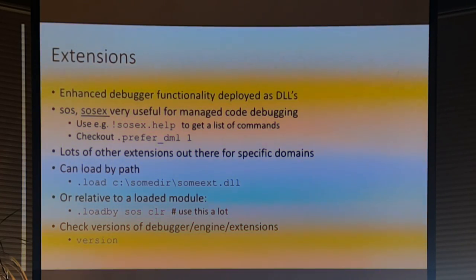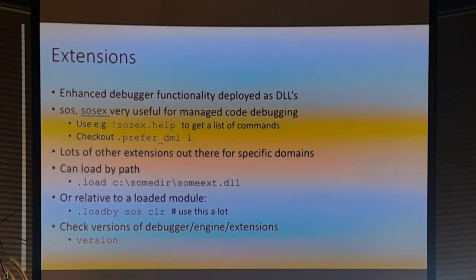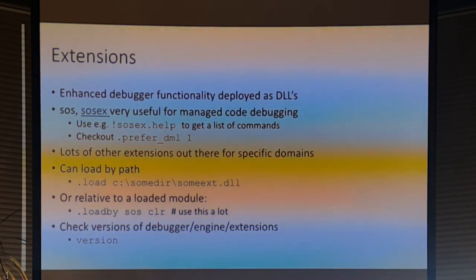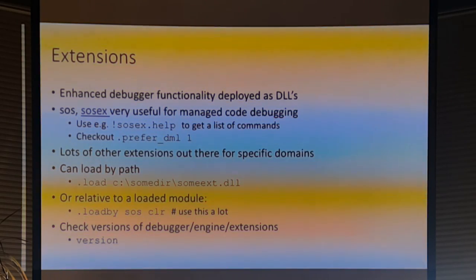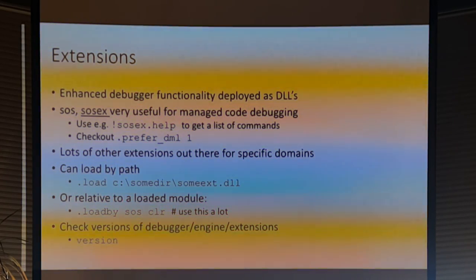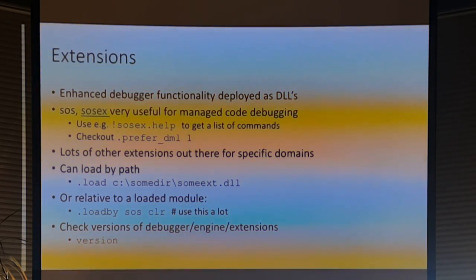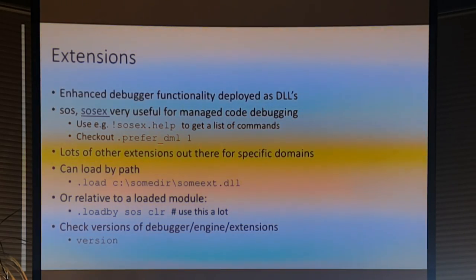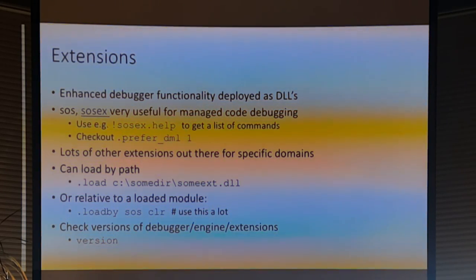To load an extension DLL you use the .load command, or load it relative to a module. .load by SOS CLR is almost always what you'll use for managed debugging — this says load the SOS extension next to the CLR.DLL module, which always gets you the correct version of SOS associated with the CLR for the .NET framework. One caveat: if you're debugging a newer version of the framework than you have on your machine, it will fail to load. If you use the .version command, it shows all loaded extension DLLs and their versions, helpful if you're trying to track down why SOS won't load.